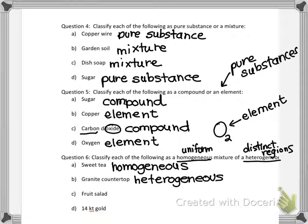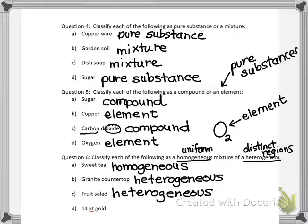Fruit salad is heterogeneous — we can see all the different fruit involved. And 14-karat gold is homogeneous. Pure gold is very soft, so different elements are added to make an alloy. When mixing solids into a homogeneous mixture, you melt them, mix them in molten form, and then solidify again. This creates the stronger metal that 14-karat gold is.